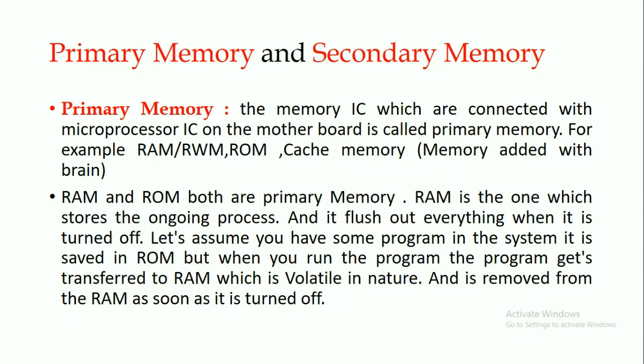The primary memory is the memory IC which is connected with the microprocessor IC on the motherboard. It is called primary memory. Examples of primary memory are RAM or read-write memory, ROM, and cache memory. So RAM and ROM both are primary memories.